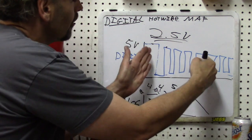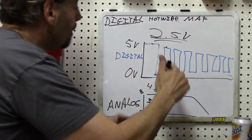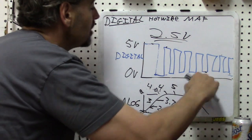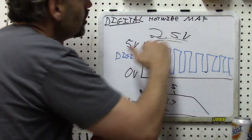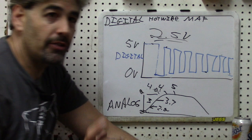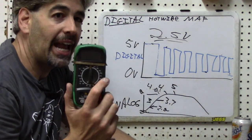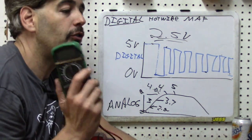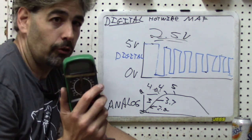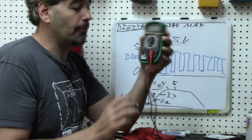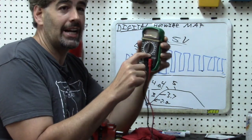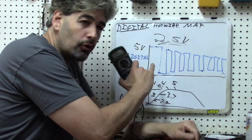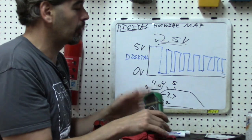Even as frequency increases, the voltmeter will still average out to 2.5 volts — so a change in frequency on a digital MAF sensor will not show up as a change on your DVOM. If you didn't understand that, you could easily falsely diagnose a MAF sensor as non-responsive. Some high-end DVOMs have a frequency function, but for most people you are going to need either a scan tool or an oscilloscope to properly test a digital MAF.